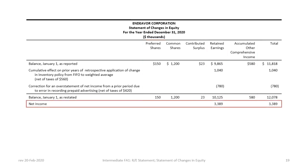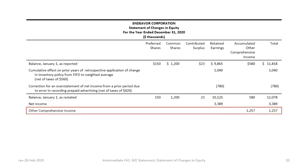Next, as with the ASPE statement, we add net income or subtract net losses. For our Endeavor example, net income was $3,389,000, adjusted in the retained earnings column and the total column. The next difference from ASPE is that under IFRS there was other comprehensive income, or OCI, of $1,257,000 — which did not appear in the ASPE retained earnings statement since OCI is not included in the ASPE income statement. OCI is not adjusted to retained earnings; it is recorded in the AOCI account specifically, and it must also be included in the total column to keep the statement balanced.